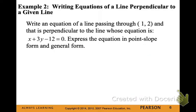So there we have our equation in both point-slope form and slope-intercept form. Example 2. Now we're going to write equations of a line that's perpendicular to a given line. So we're writing an equation of a line that passes through the point (1, 2), and is perpendicular to the line whose equation is x plus 3y minus 12.